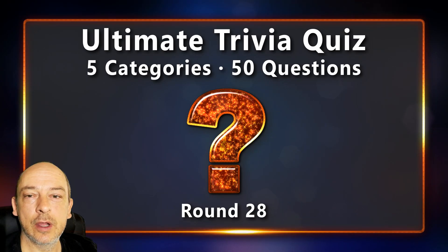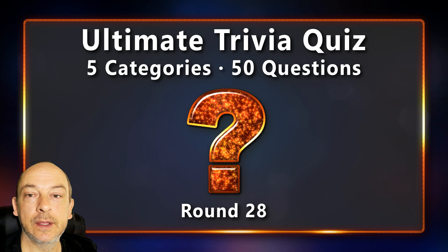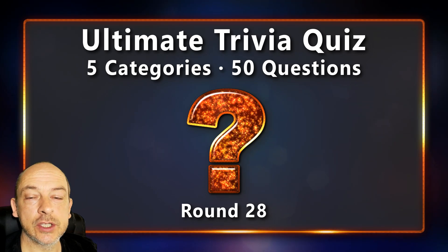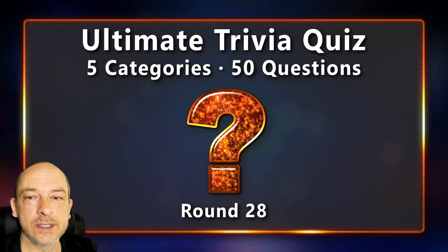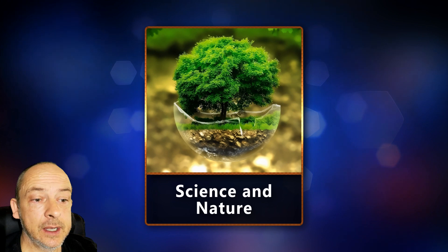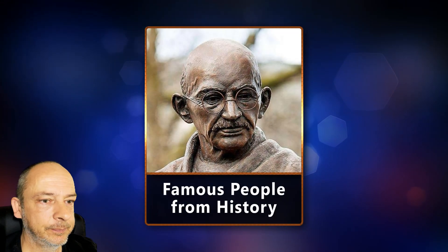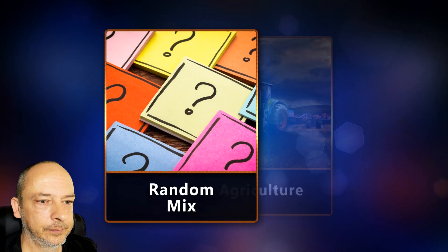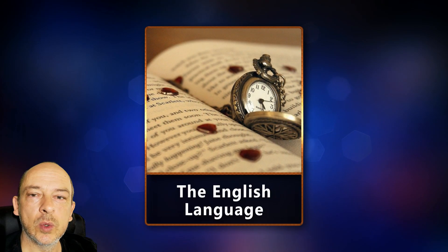Hello trivia friends, welcome back to another round of the ultimate trivia quiz. My name is Sean and I've put together another interesting and challenging general knowledge quiz for you — 50 questions as always, split over five rounds. Today's topics are science and nature, famous people from history, a random mix, agriculture, and finally the English language. Let's start the quiz!